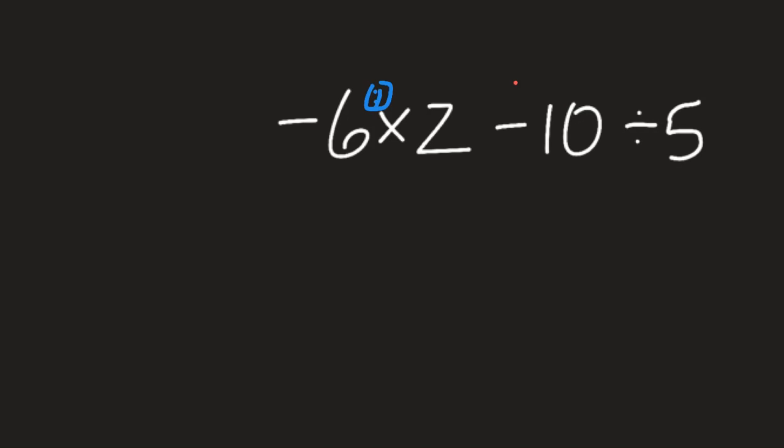So let's deal with negative 6 times positive 2 first. A negative times a positive makes a negative, and 6 times 2 is 12. I next write my subtract sign from right here. So that subtract comes down. I then deal with